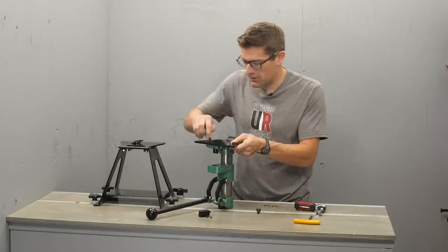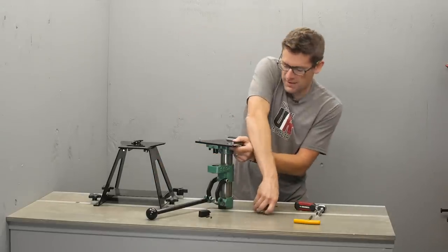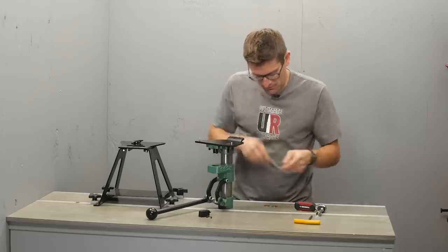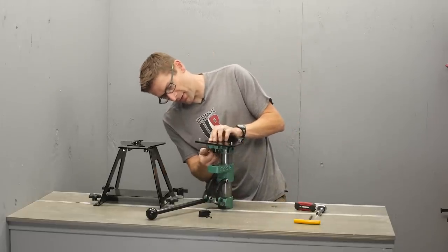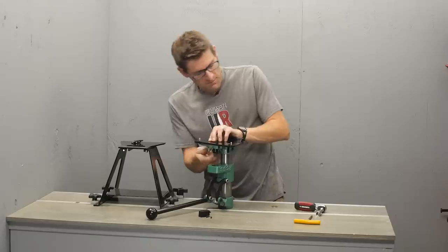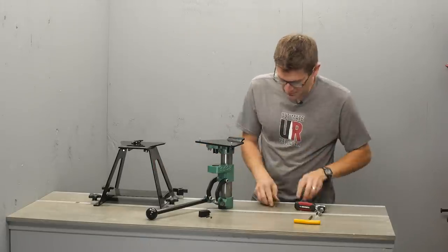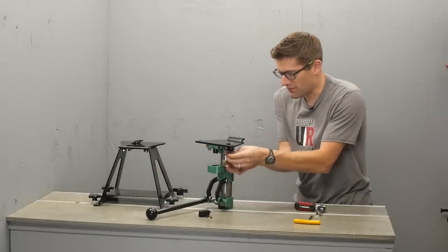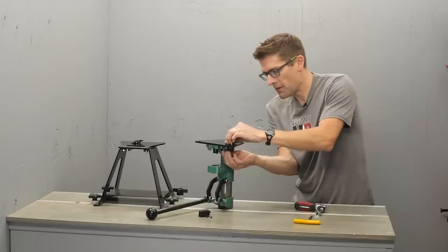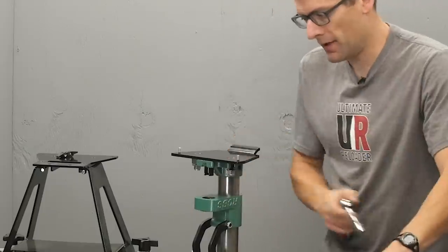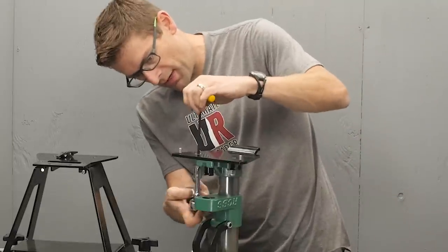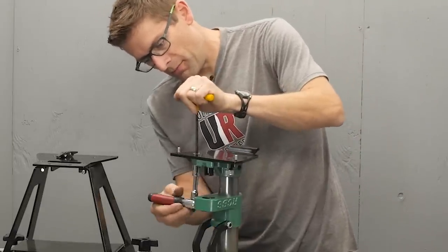And then we're just going to run both of these bolts through. And then there's nylock nuts, which are nice because they're not going to back out on you, which obviously is not what you want. Now we just need to tighten things down. It's a pretty quick process.